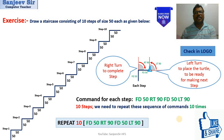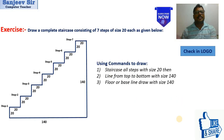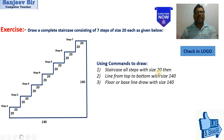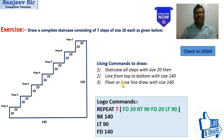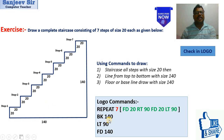Now we move to the next exercise. This staircase also has a wall and a baseline at the bottom. The command is to draw a staircase with seven steps of size 20 each. After the steps, there is a line from top to bottom of size 140, and then a floor or baseline of size 140. The repeat command is similar to the previous stair, but with seven steps and size 20. After that, we use BK 140.